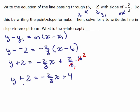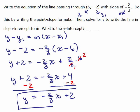And then just subtract 2 from both sides to get Y equals negative 2/3 X plus 2. Alright, because it says solve for Y to write in slope-intercept form. So what's the Y-intercept? Zero, 2.